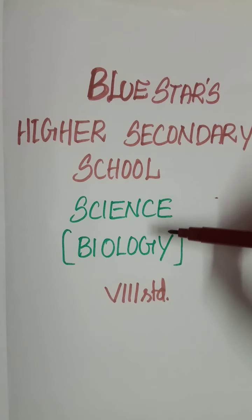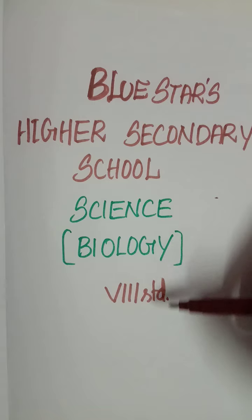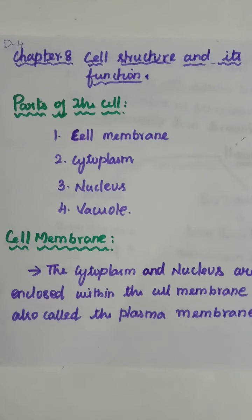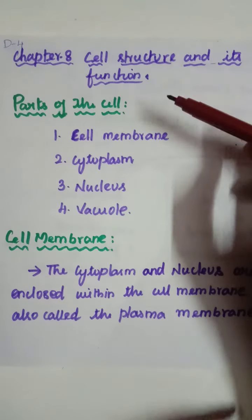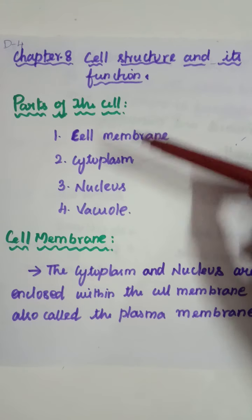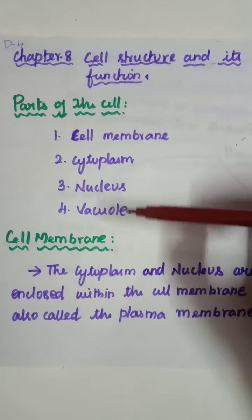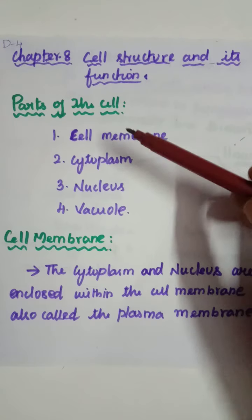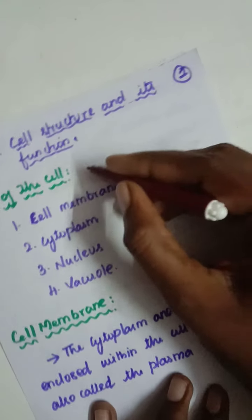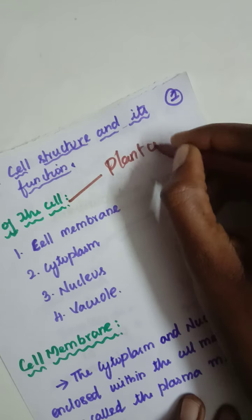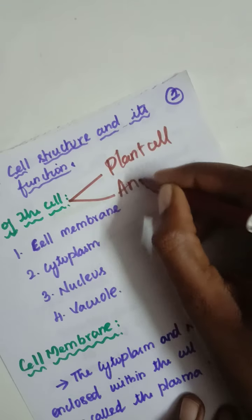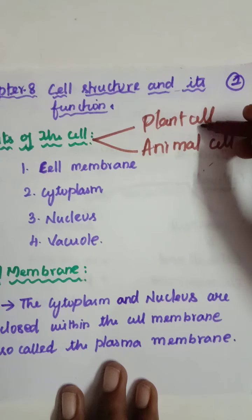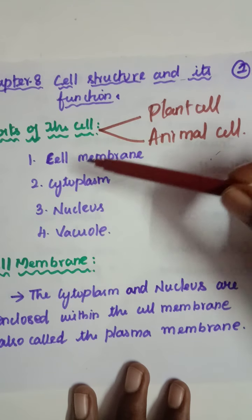Welcome to Blue Star High Secondary School. Today's subject is Science, Biology part, Standard 8. Dear students, we have already learned four topics from this lesson. Today's topic is the parts of the cell. These parts of the cell are cell membrane, cytoplasm, nucleus, and vacuole — these four parts are common in both plant and animal cells.